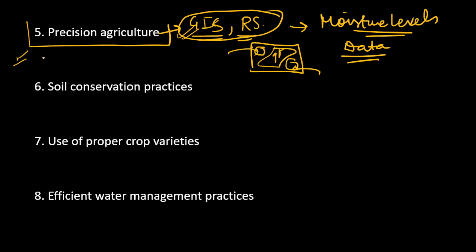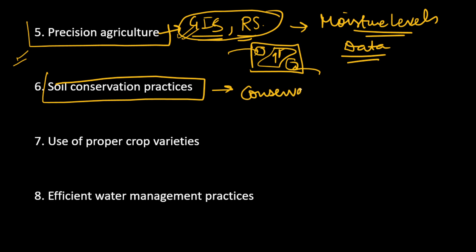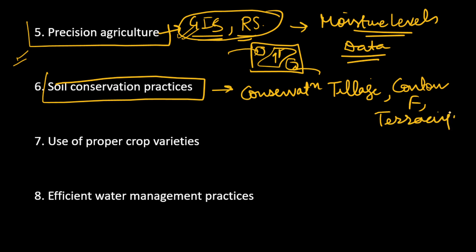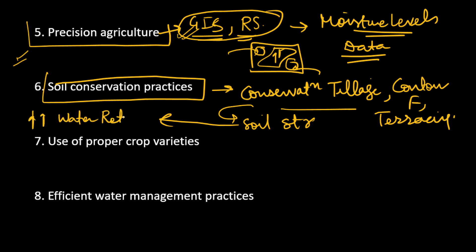We can also practice soil conservation practices such as conservation tillage, contour farming, and terracing. These practices improve our soil structure, which in turn improves the water retention capacity of the soil. When water retention capacity increases, water is used more efficiently, the amount of irrigation required comes down, and overall it helps in efficient cropping patterns and good yields.